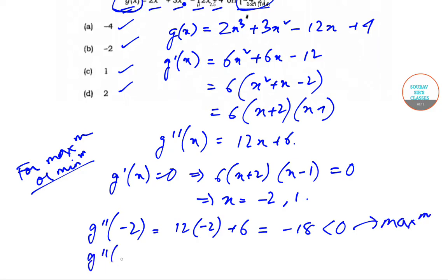Now let us find out g''(1). Now g''(1) is 12(1) + 6, that is 18, which is greater than 0, and so we get a minimum over here.